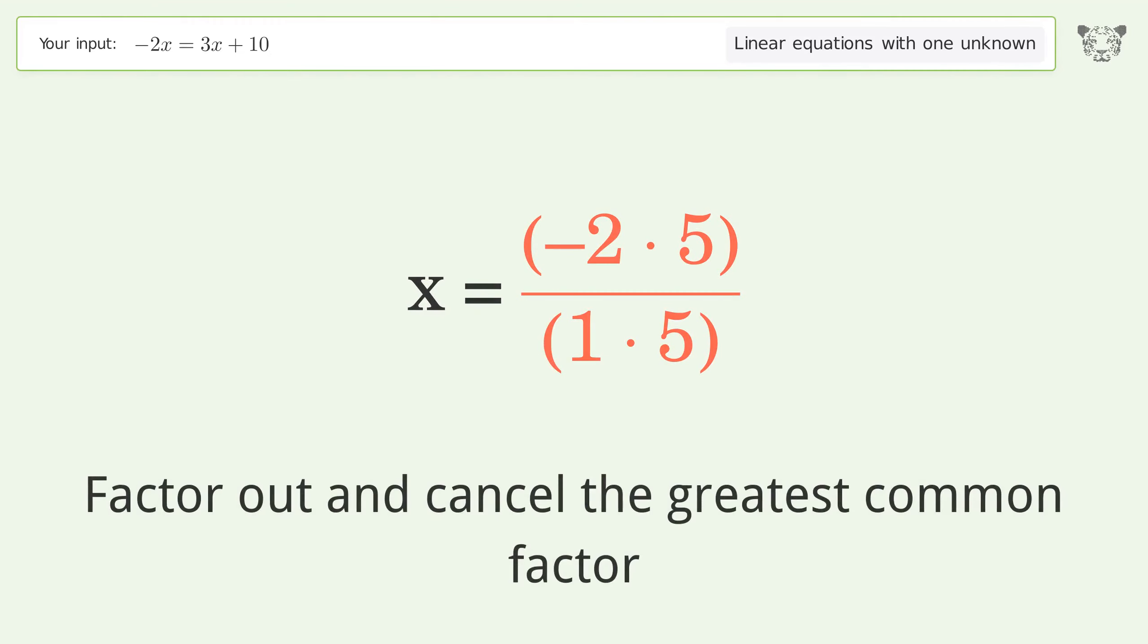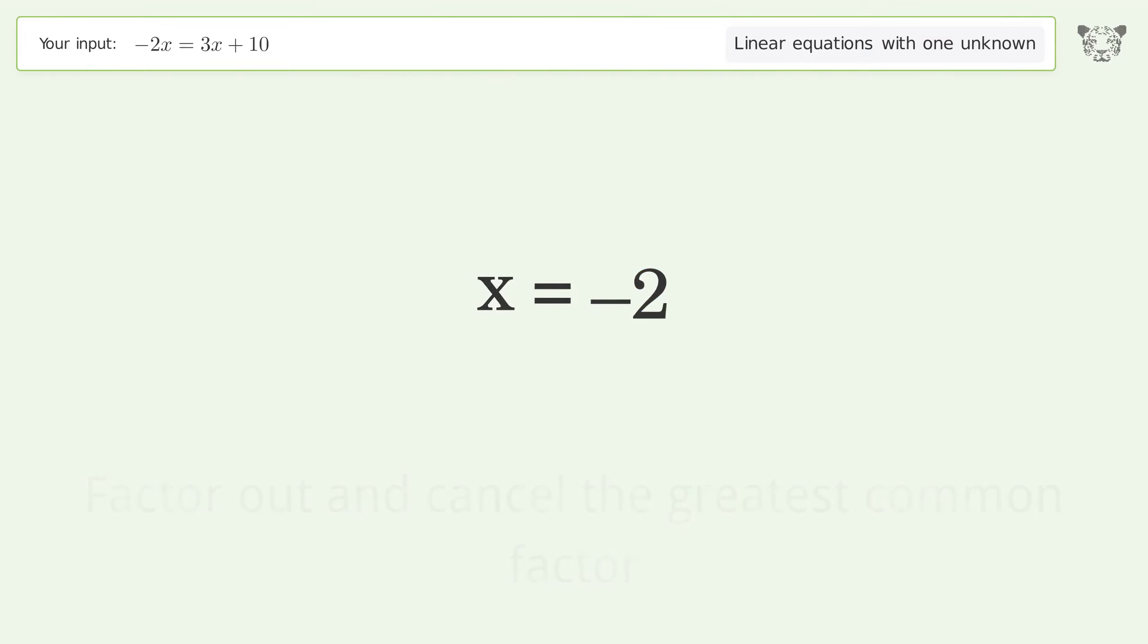Factor out and cancel the greatest common factor. And so the final result is x equals negative 2.